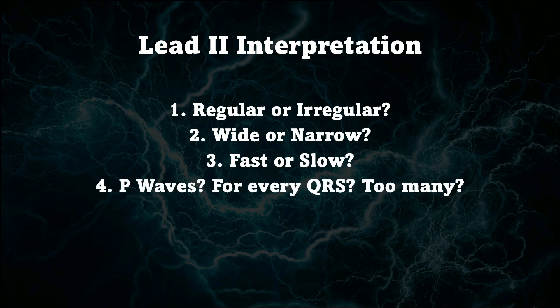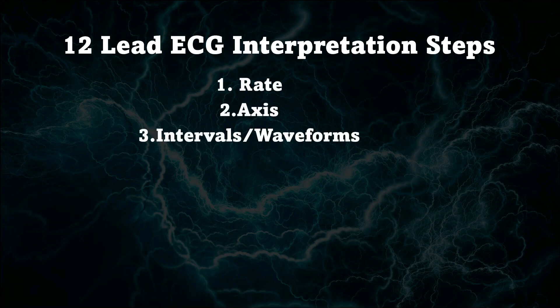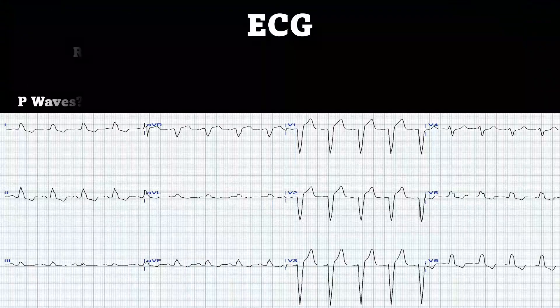Next we're going to look for P waves — is there one for every QRS, are there too many? Finally, for a 12-lead interpretation, we're going to look at our rate, our axis, our intervals and waveforms, look for hypertrophy, extra beats, and infarction.